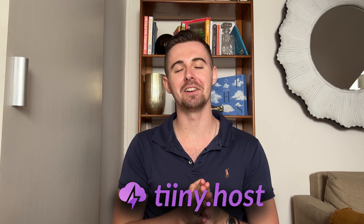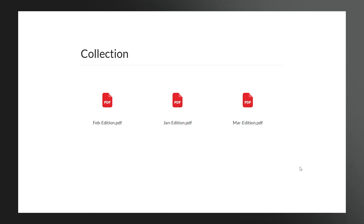To get started, simply head over to tiny.host, then drag and drop your newsletter files. You can even upload multiple issues at once by compressing them into a zip file. It will then automatically extract your files and create a neat collection.